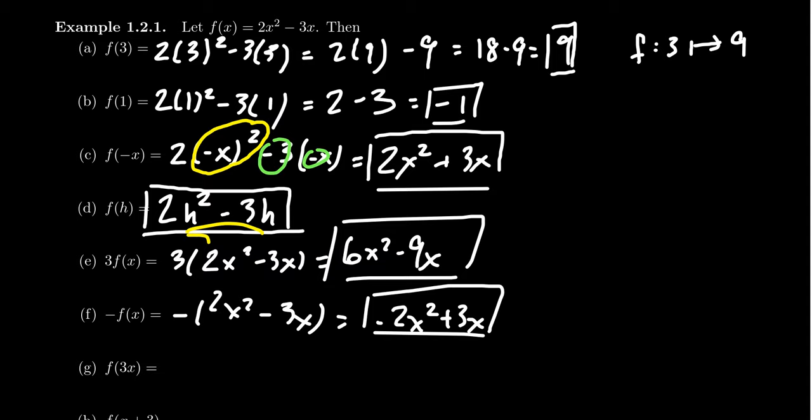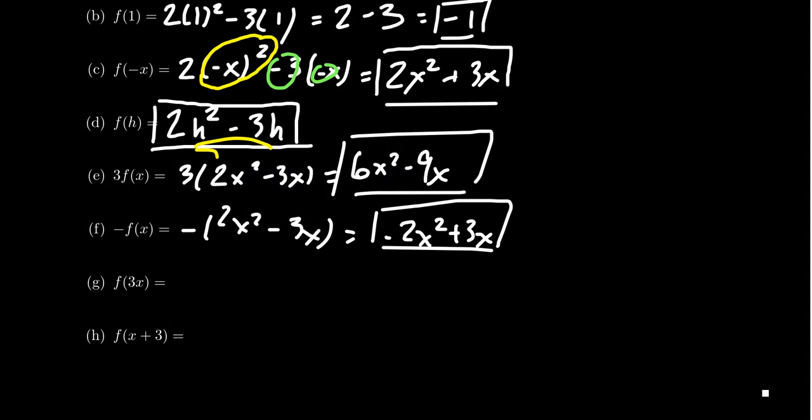So we can start doing operations on the outside of the function, we can also do some on the inside of the function. Let's go back and let's replace x with 3x. What that means is we'll take 2, instead of an x, we'll replace it with 3x, put parentheses around it to make sure we get the scope correct, and then minus 3 times 3x. And then we simplify this thing algebraically, 3x squared means 3x times 3x.